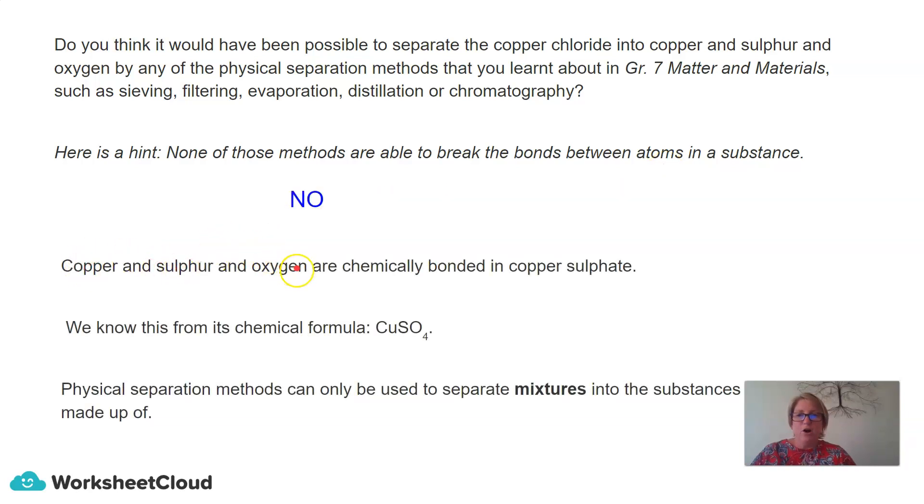Copper and sulfur and oxygen are chemically bonded into a copper sulfate solution. So remember, copper, sulfur and oxygen are elements. So those atoms chemically combine to form copper sulfate that is a compound. And we know that the chemical formula for copper sulfate is CuSO4.